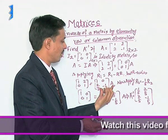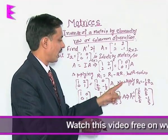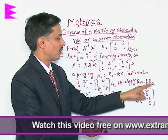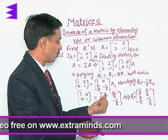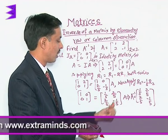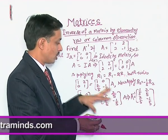Similarly, if I apply here we will get this result and when we apply R2 equals minus 1 by 5 R2 we will get this result that is identity matrix which equals [[1/5, 2/5], [2/5, -1/5]] into A.